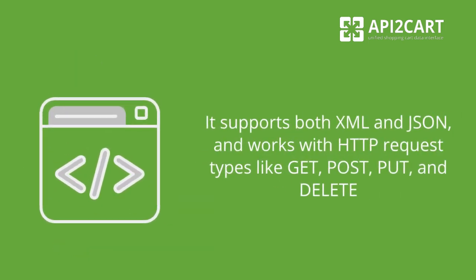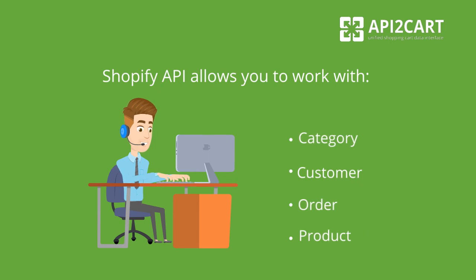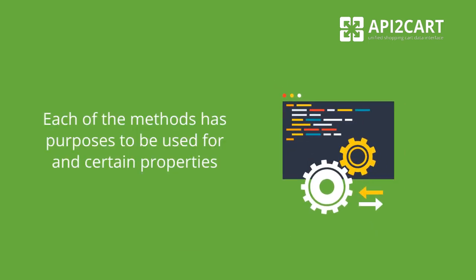It supports both XML and JSON, and works with HTTP request types like GET, POST, PUT, and DELETE. Shopify API allows you to work with Category, Customer, Order, Product, etc. Each of the methods has purposes to be used for and certain properties.